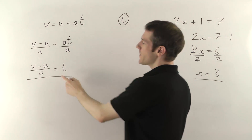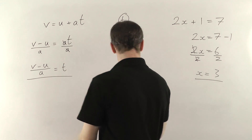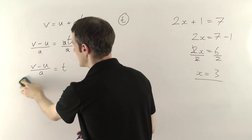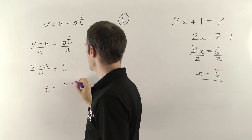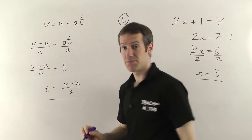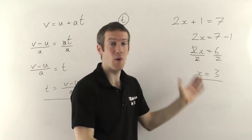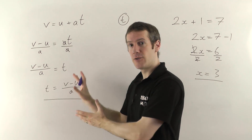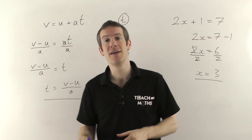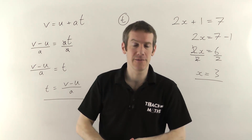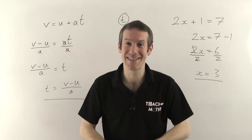Don't worry about having the letter on the right — you can flip it round if you want. Some people like to have the letter by itself on the left-hand side at the end; it doesn't really make a difference since the equals sign just means the things on either side are the same. So that's it — if you know how to solve equations, this is fairly straightforward. Go and watch transposition three to learn how to deal with brackets, and transposition four will deal with fractions, and then you'll be able to do everything. My name's Jonathan Hicks and you're watching Teach Me Maths.